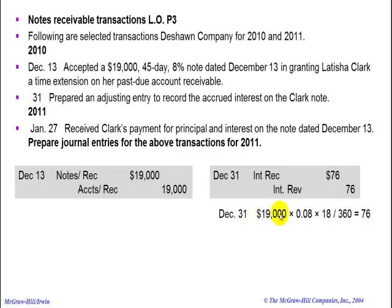When all that is put through your calculator, you should get $76 worth of interest that has been earned but not received — earned as of December 31st.